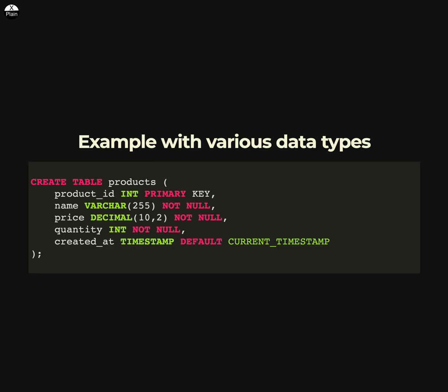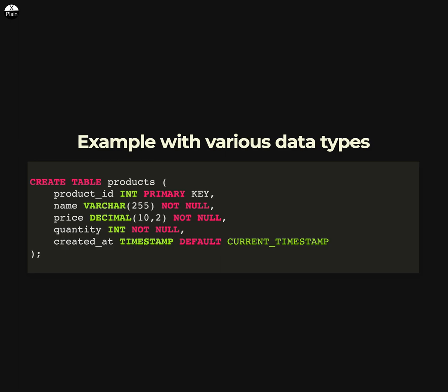Here is an example of creating a table with various data types in SQL. This statement creates a table called products with four columns: product ID as an integer, name as a string, price as a decimal, and quantity as an integer.